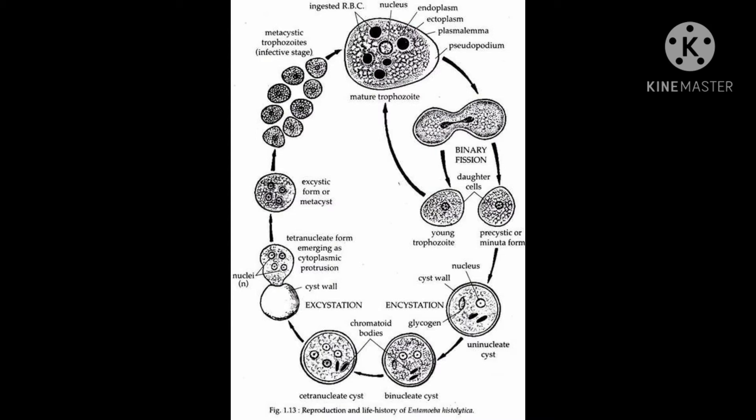These metacystic trophozoites convert into mature trophozoites. Some trophozoites enter into the lungs and the liver of man, showing extra-intestinal migration also.